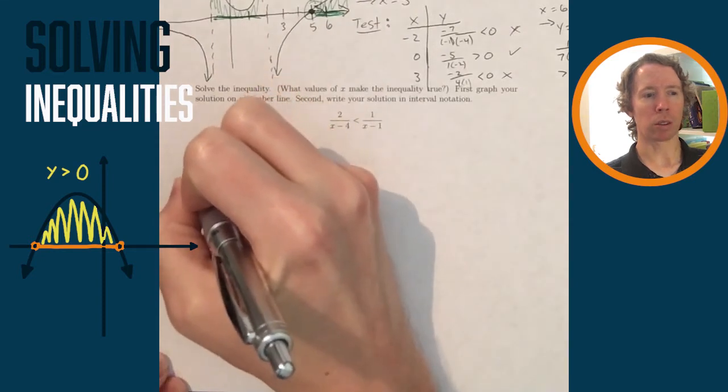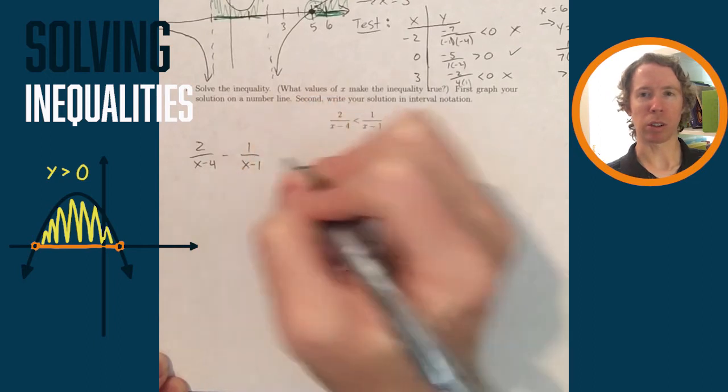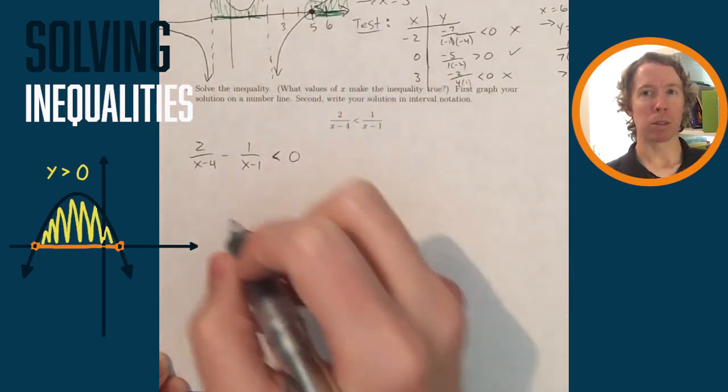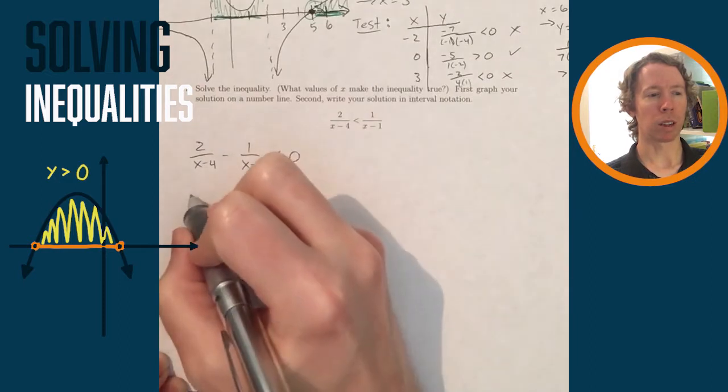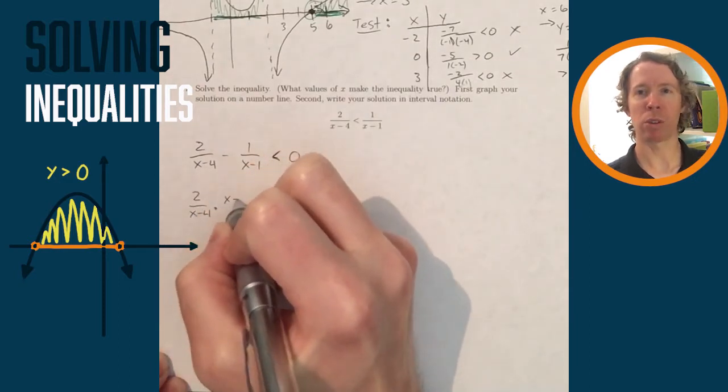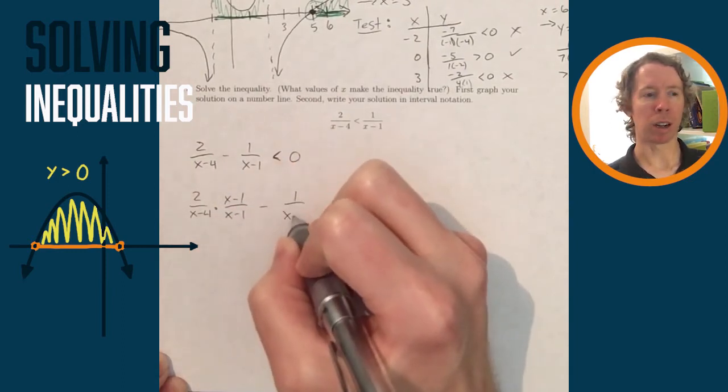All right, I want to know when this rational expression on the left is less than the rational expression on the right. You may be able to use your intuition to guess and check through this and get the correct answer, but I'm going to give you a way to do this every time.